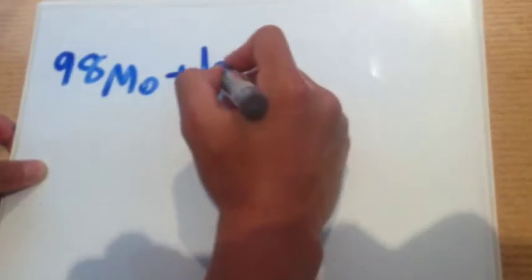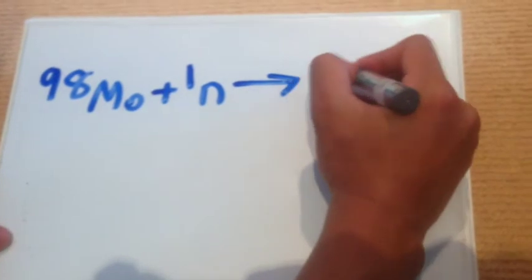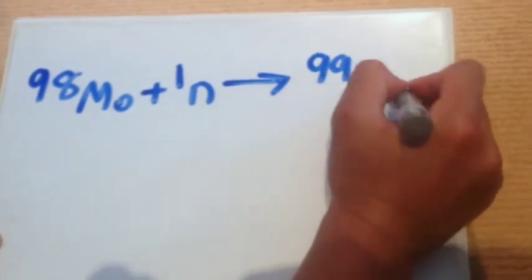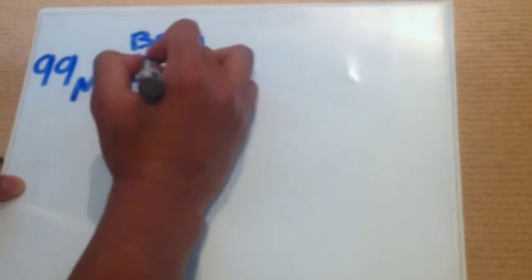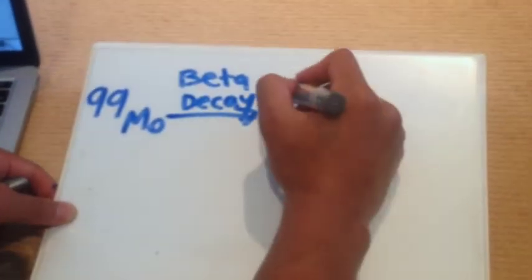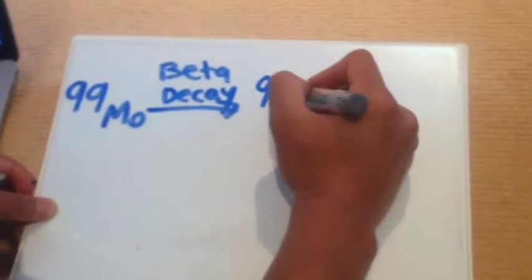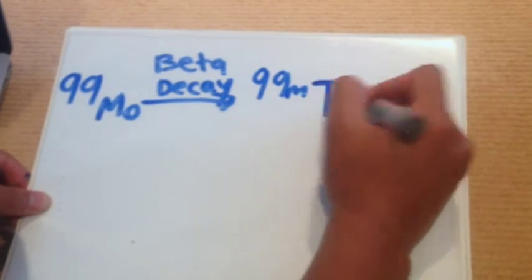Here, the production of technetium-99m is shown through a chemical equation. Firstly, molybdenum-98 is bombarded by a neutron, which then produces molybdenum-99. Next, the molybdenum-99 undergoes beta decay, producing technetium-99m and a beta particle.